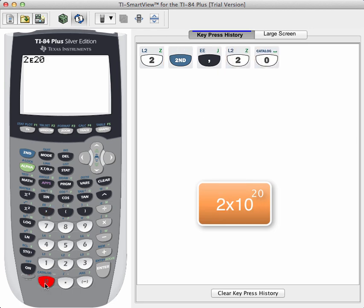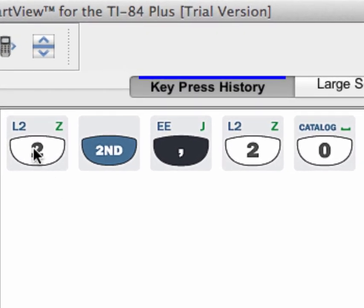So this now is 2 times 10 to the 20th, the way your calculator understands it. If you enter in these numbers in this fashion - 2, second comma to get the e button and then the exponent of 20 - you will always get accurate answers out.